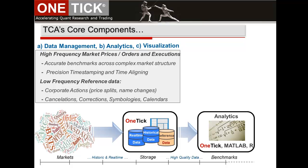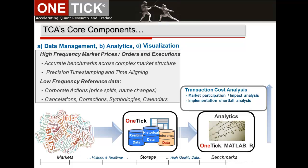Analysis of trade execution is necessarily complex and involves the comparison of execution prices against a variety of benchmarks for three primary drivers of cost analysis: market participation, market impact, and implementation shortfall. Costs fall into explicit costs — taxes, fees, and broker commissions — and implicit costs, which represent the invisible portion consisting of the bid-ask spread, market impact, and costs from lost opportunity, whether that's operational delays, market timing of order submission, or any missed profit from unfilled portions of an order.